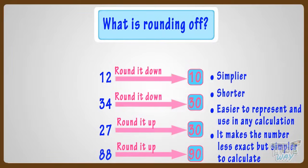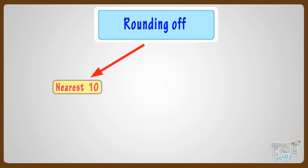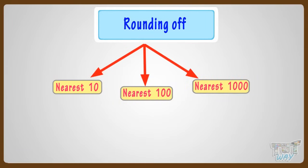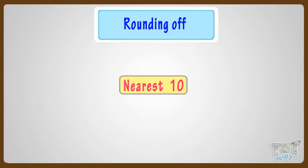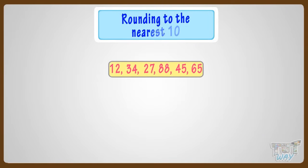Rounding can be to the nearest ten, nearest 100, or nearest 1000. So let's first learn rounding to the nearest ten. Here are a few numbers: 12, 34, 27, 88, 45, 65. We have to round them up to the nearest ten.